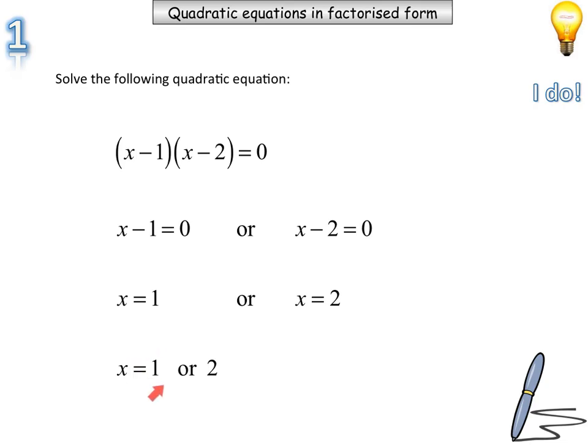So if I substitute one into my original equation, this will be one take away one, that part is zero. And then zero multiplied by anything is equal to zero. And if I substitute two into this equation, I'll have two take away one, which is one, multiplied by two, take away two, and that's zero. So then the product will be equal to zero. So we have two answers. It's one or it is equal to two.